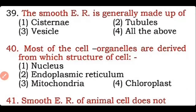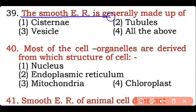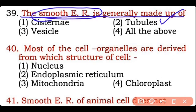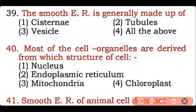Question 39: Smooth endoplasmic reticulum is generally composed of — cisternae, tubules, vesicles, or all of the above? Correct answer is option two — smooth endoplasmic reticulum is generally composed of tubules.